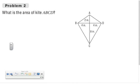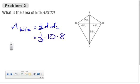Let's find the area of a kite. What are the lengths of my diagonals here? Ten and eight. So our final answer is forty square inches.